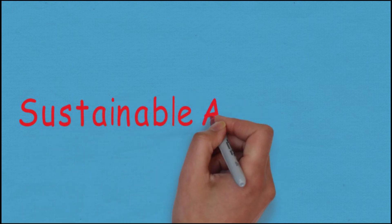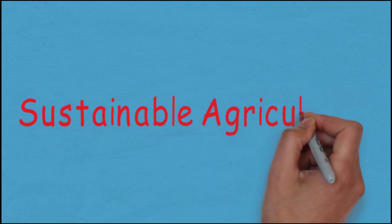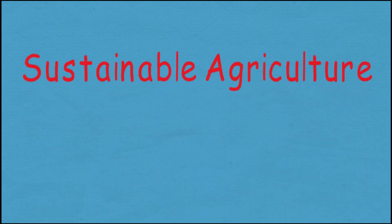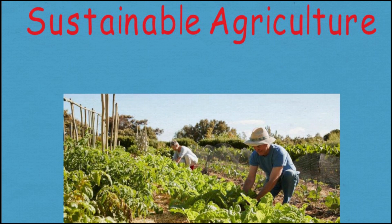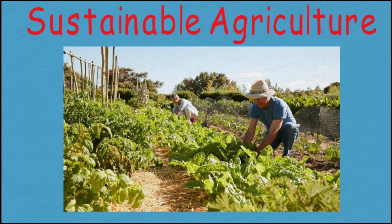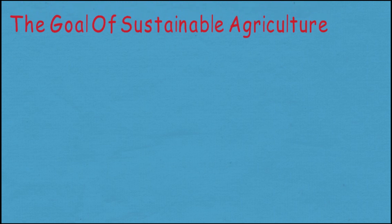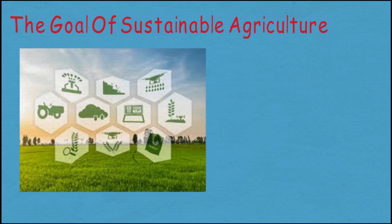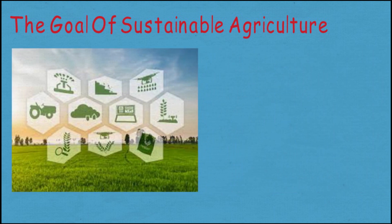Hello everyone, today we will be talking about sustainable agriculture. Agriculture is the most important economic activity in the world, but often places significant pressure on natural resources and the environment. The goal of sustainable agriculture is to meet society's food and textile needs in the present without compromising the ability of future generations to meet their own needs.